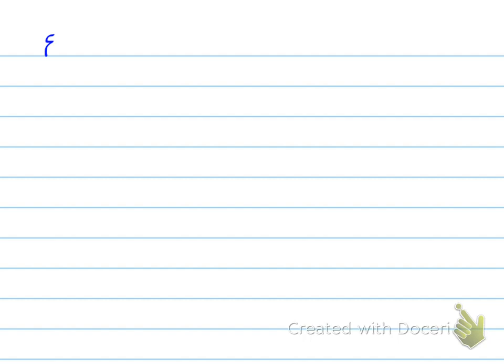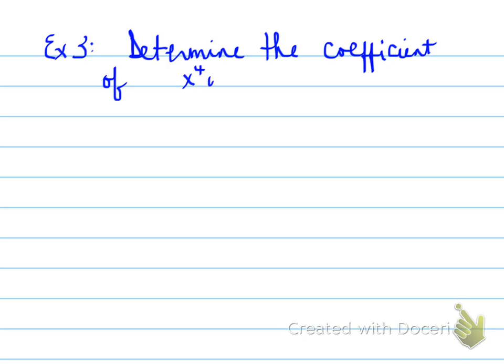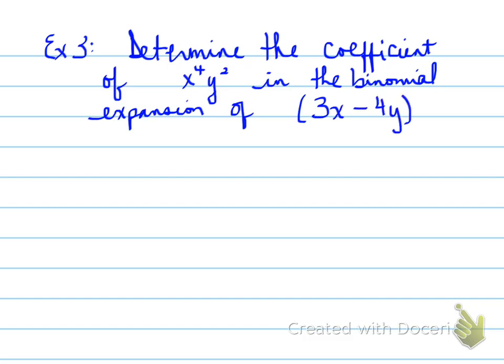Let's look at the next one. Example number 3. Determine the coefficient of x^4 y^2 in the binomial expansion of 3x minus 4y to the power of 6. What's important here to know is that sometimes I'm not going to ask you for a full expansion. I may ask you for one specific coefficient in the entire expansion.